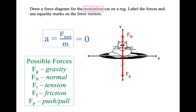We don't need any other forces — there are no chains or ropes for tension, no friction since the cat isn't sliding, and nothing pushing or pulling it. So all we draw is gravity and normal force, and they are equal because the cat is not accelerating.